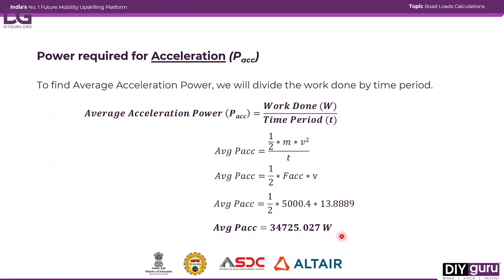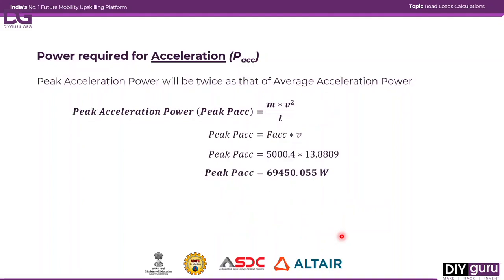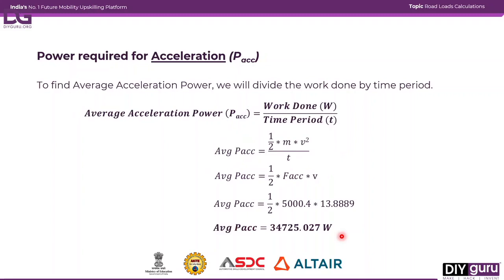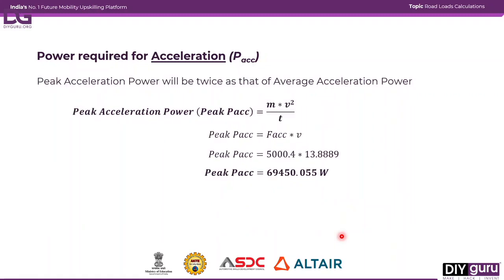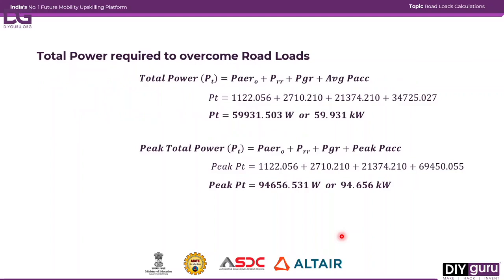This is the average acceleration power, since the variation over the time period is averaged out. For peak acceleration power, the ½ factor is removed, giving mass times velocity squared divided by time, which equals the acceleration force multiplied by velocity. The peak acceleration power required is 69,450 watts.